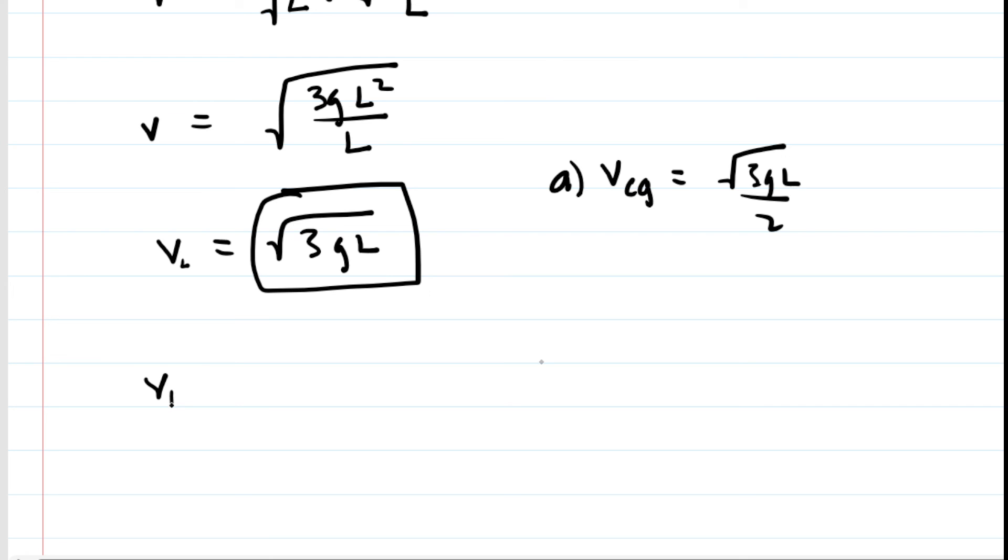is actually twice as big as the speed of the center of gravity. So another way of expressing the speed of the lower end of the rod would be to say that it is twice the speed of the rod's center of gravity. So that would be another way of expressing the answer to part B.